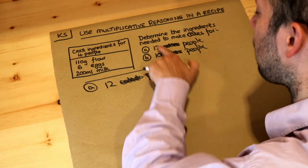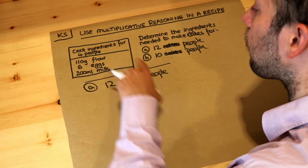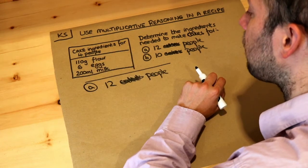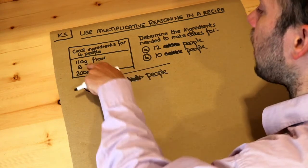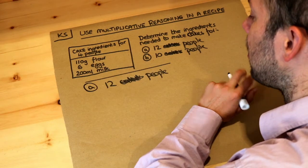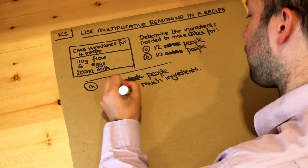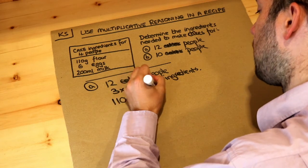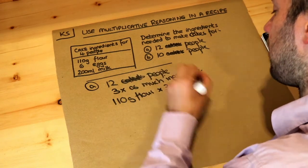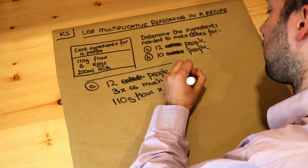If we're cooking for 12 people, that's three times as much as four people. So we need three times as much ingredients. If we take 110 grams of flour and times that by three, we're going to need 330 grams of flour.